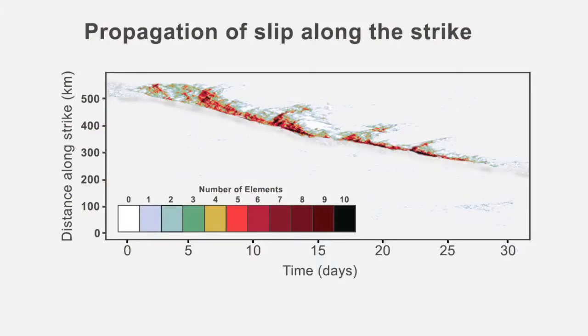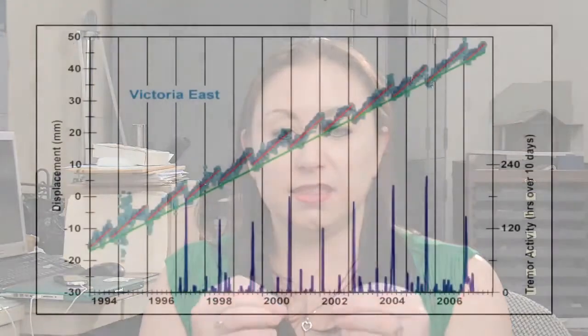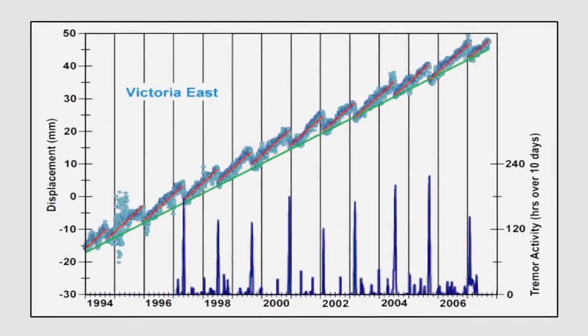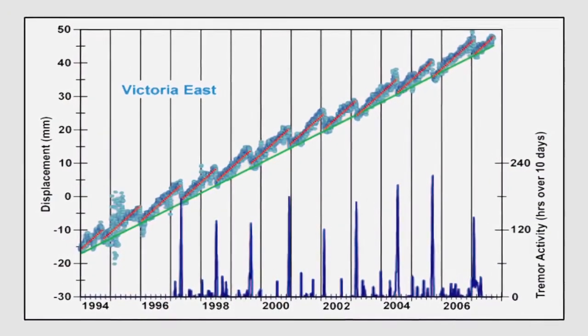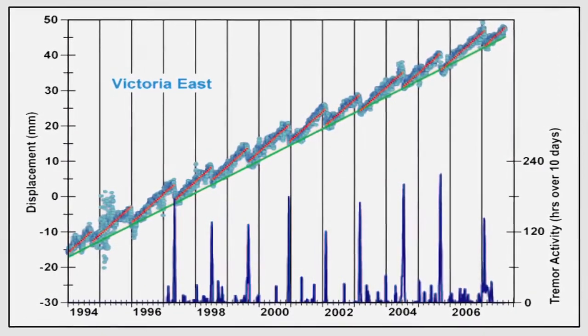A slow slip event propagates on the order of 10 kilometers a day. So the model allows you to see them in real time in just a few seconds, versus being able to wait 30 days to capture them using GPS or some other tool. Not only that, but we get to look at the complexity of these slow slip events, which is something that we can't get from the observations — the complexity of them compared to traditional earthquakes.